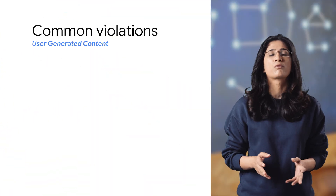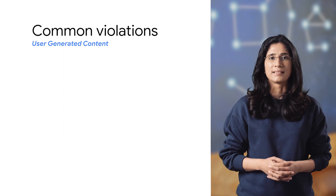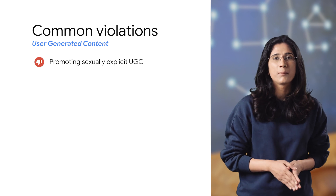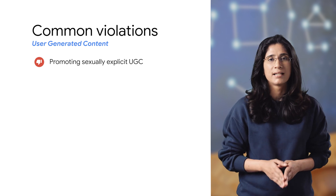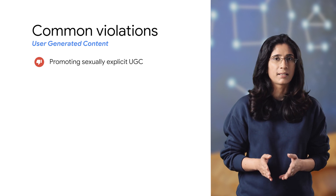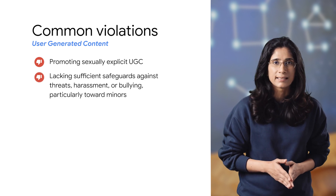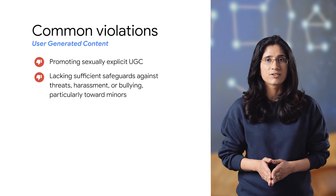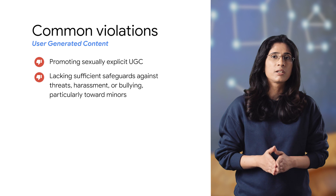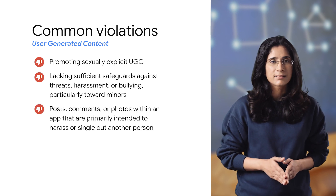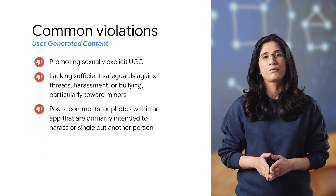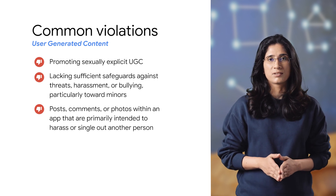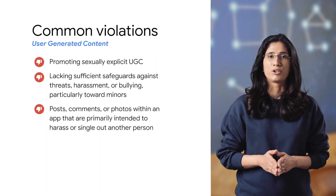Here are some examples of common violations of UGC policy. Apps that promote sexually explicit UGC, including implementing or permitting paid features that principally encourage the sharing of objectionable content. Secondly, apps with UGC that lack sufficient safeguards against threats, harassment or bullying, particularly towards minors. Next, posts, comments or photos within an app that are primarily intended to harass or single out another person for abuse, malicious attack or ridicule.